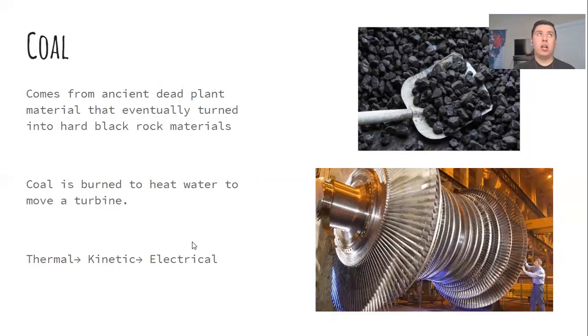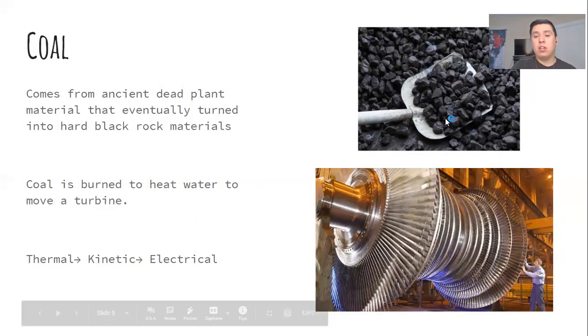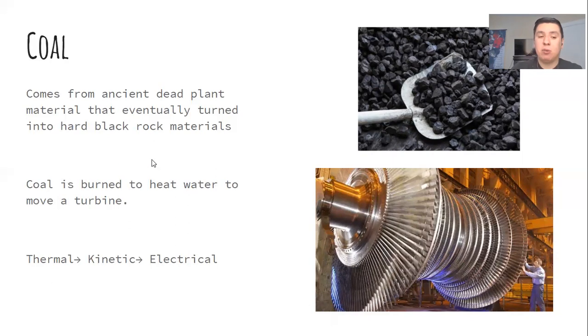Then we have coal. Coal is similar to oil and gas, but it comes from dead plants that come together to form hard black rock material. There's a picture in the top right. This is the steam turbine I talked about last time. Coal is burned and causes steam from heated water, which rotates a turbine to generate electricity. Same as oil and natural gas: burned to heat water to move a turbine. Burning creates thermal energy, the movement of the turbine creates kinetic energy, then it produces electrical energy.